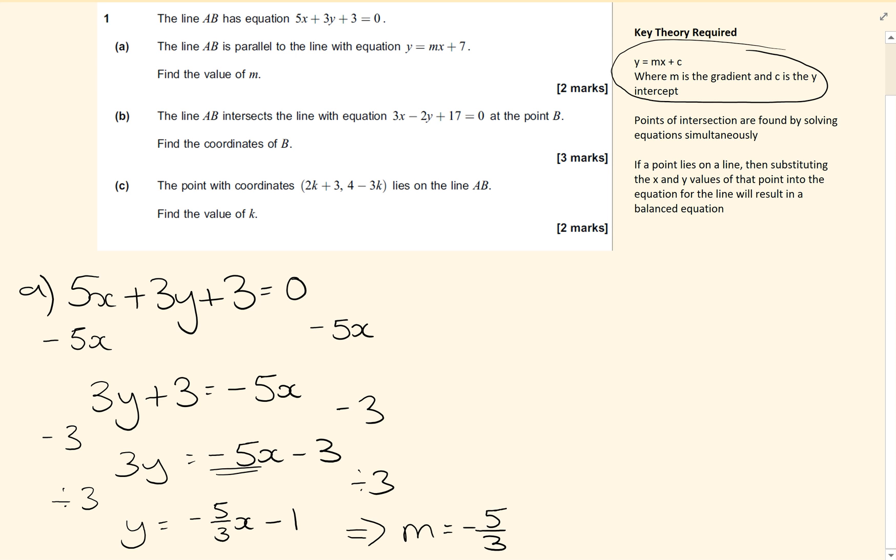For part b, we're looking for a and b intersecting with a different line. So we have two lines of a similar format.